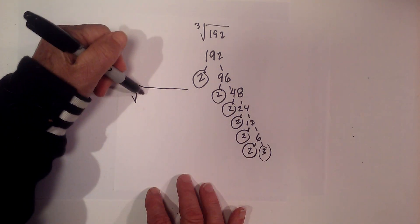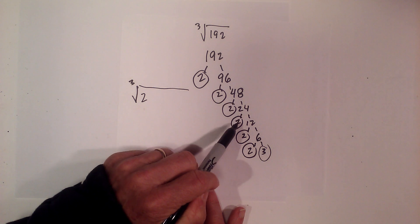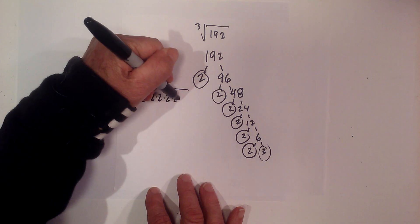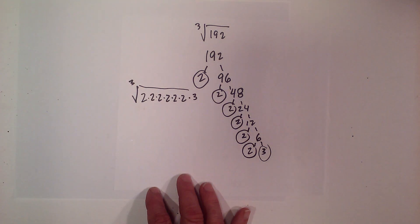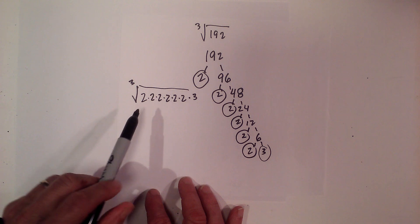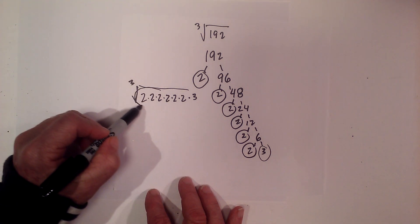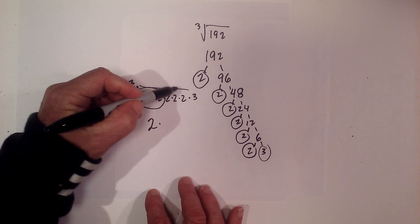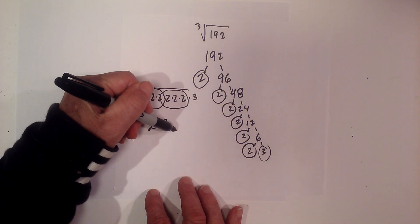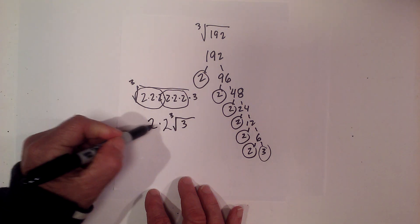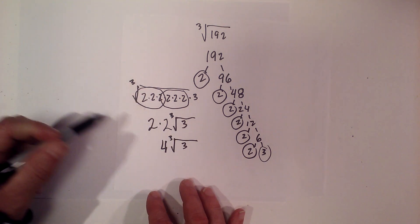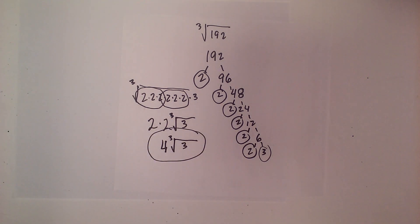I'll circle the 3 because it's prime. Let me count the 2s: 1, 2, 3, 4, 5, 6. So we have 2 times 2 times 2 times 2 times 2 times 2, times 3. Now applying the triplet rule: if you have triplets, you may pull one number out from under the radical sign. So there's a 2 from the first triplet, times another 2 from the second triplet. But we still have a 3 and there's only one of those, so it stays under the radical sign. Multiplying 2 times 2 gives 4, so the cube root of 192 is 4 cube root of 3.